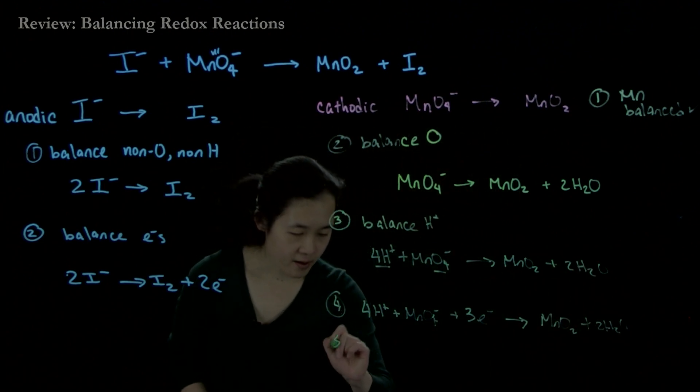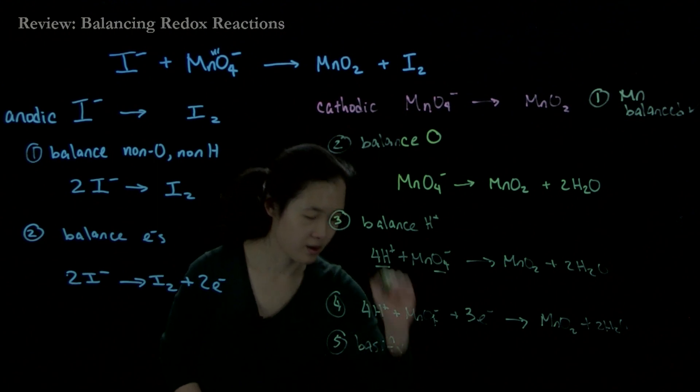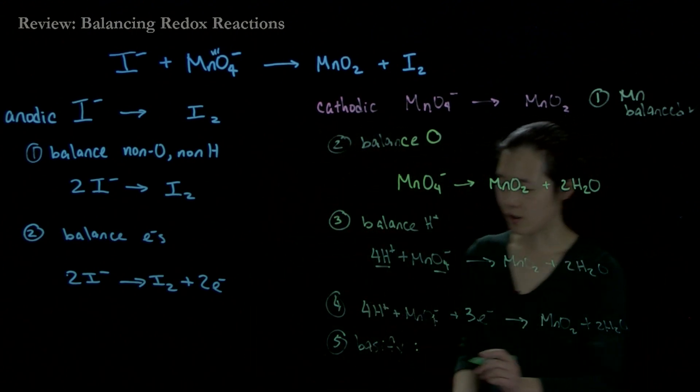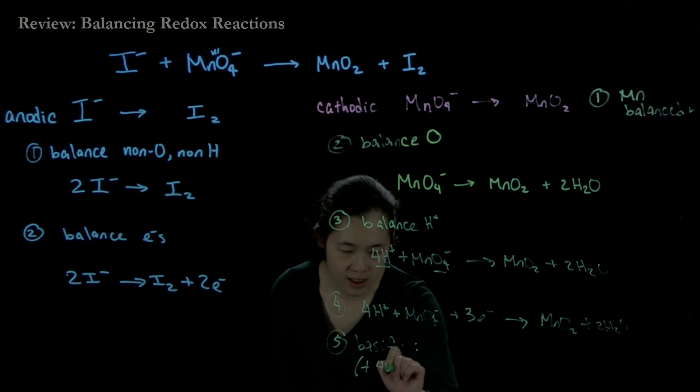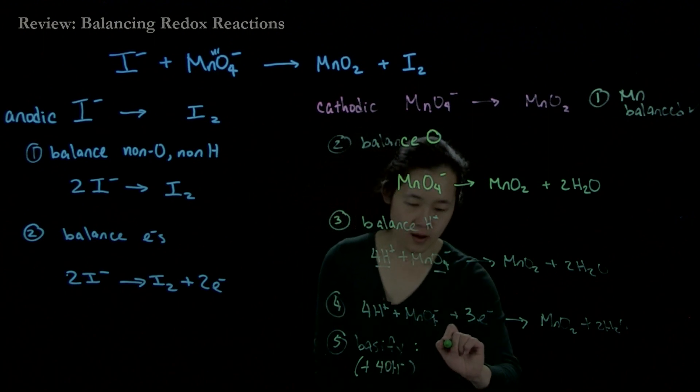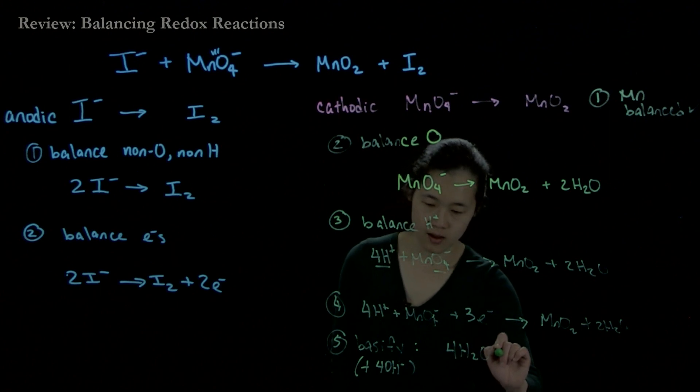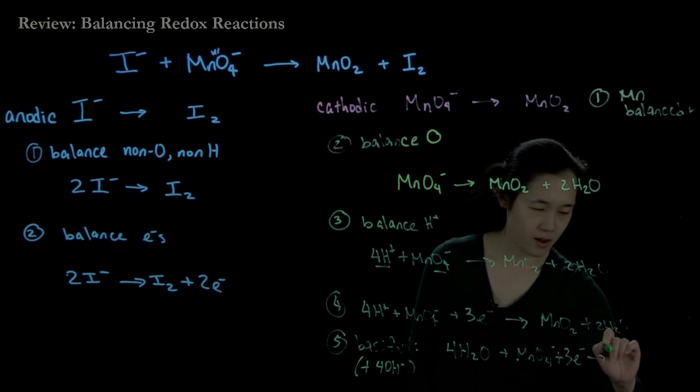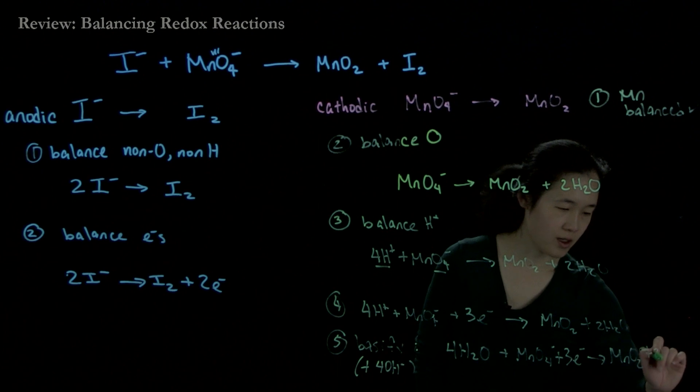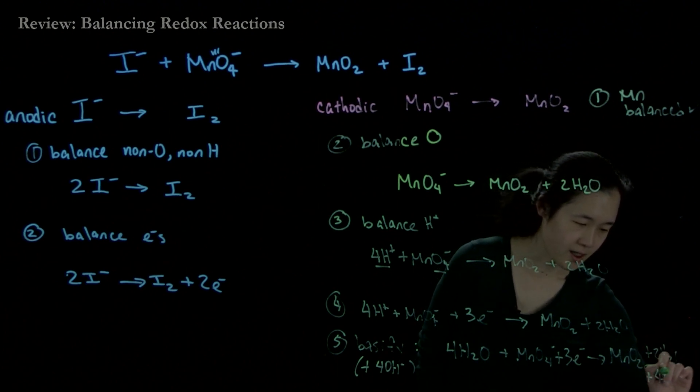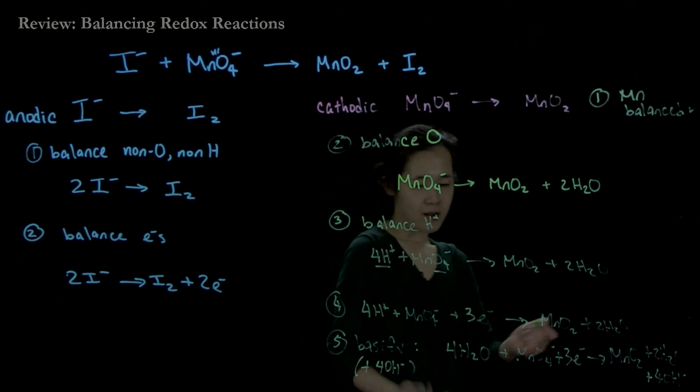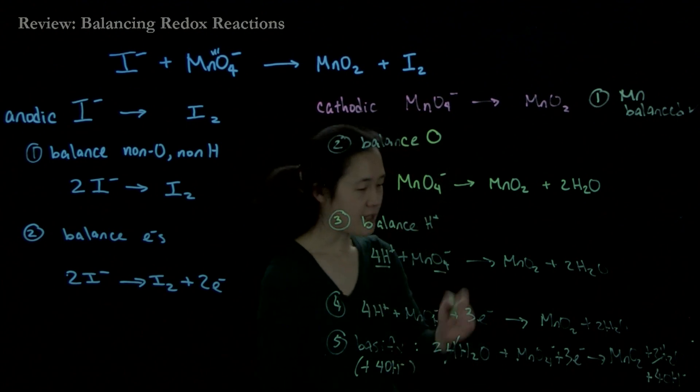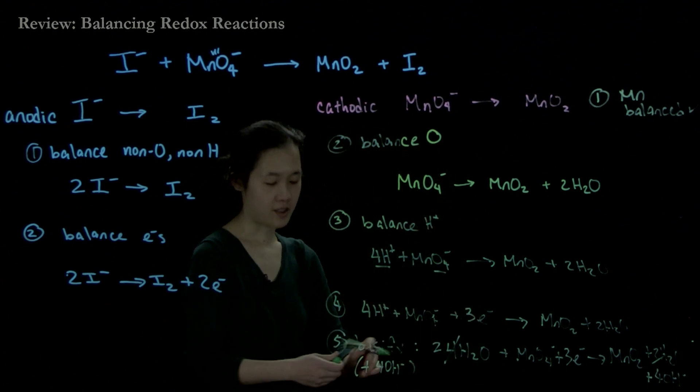Step five: we'll basify. We'll add hydroxide to balance out each of the protons, so we're going to add four hydroxides to each side. This gives us 4H2O plus MnO4- plus 3e- goes to MnO2 plus 2H2O plus 4OH-. Now we'll cancel out the waters. Two waters cancel on each side, leaving 2H2O plus MnO4- plus 3e- goes to MnO2 plus 4OH-. That's our final balanced reduction half-reaction.